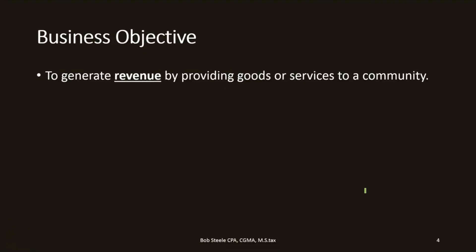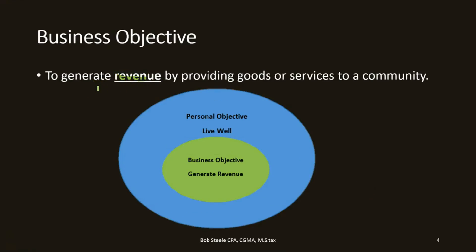Business objectives: to generate revenue by providing goods or services to a community. The business objective is to generate revenue, as opposed to a personal objective, which is something like to live well. The first concept of accounting is that we separate the business objective from the personal objective. That separation helps us measure how well we're doing in both areas — we can look at how we're doing toward the business goal, and separately toward our personal goals.